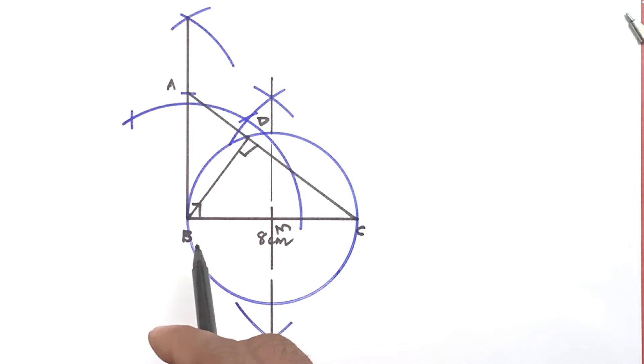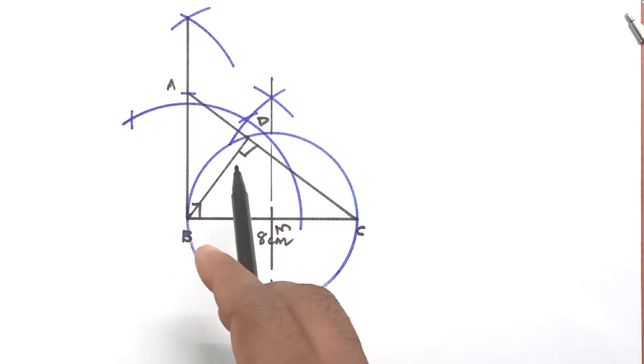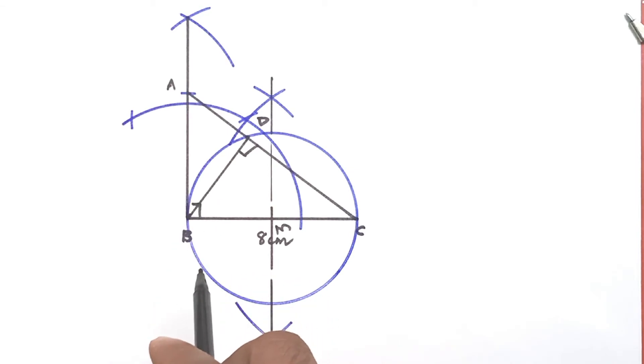Also, the circle passes through B, D, and C. AB is the tangent to the circle centered at M because BM is the radius which is perpendicular to AB. So AB is one of the tangents.